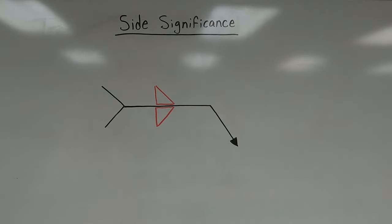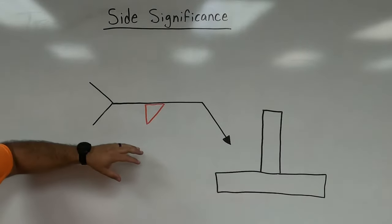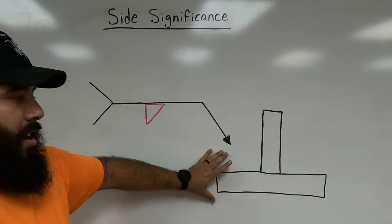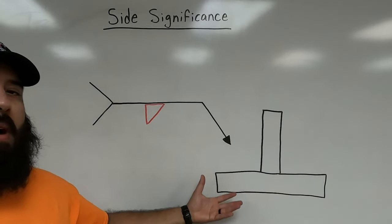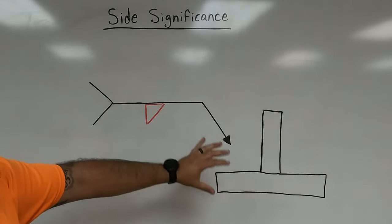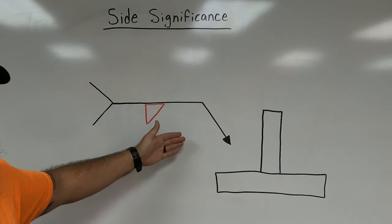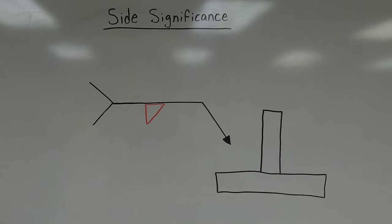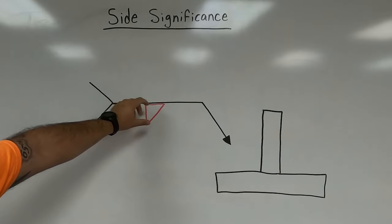To help understand side significance, I've drawn a quick illustration of a T-joint. The welding symbols on blueprints are always going to point somewhere along the project to be welded — this is how we know where the weld is being placed. The information on the reference line then specifies exactly how that weld is to be made.